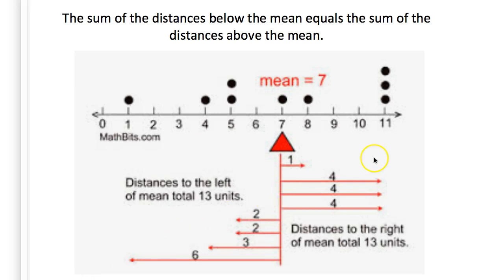For example, the three data points at 11 are each a distance of four units above the mean, and you can see their distances recorded down here. The distances to the right of the mean total 13 units.